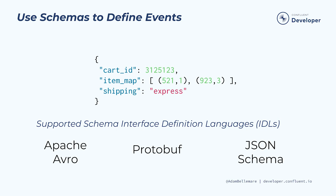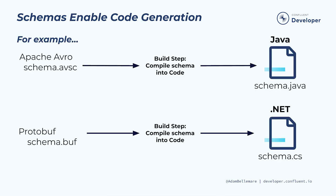Apache Avro, Google's protobuf, and JSON schema are three common IDLs that provide structure, format, and documentation for events. Schemas enable code generation as either a consumer or a producer. While your compilation options depend on both the schema IDL and the programming language you're using, the idea is that you can take the schema and compile it into a class or object suitable for your language. Compiled languages get the benefit of compile time type checking, which significantly reduces mistakes and errors in data creation and usage.